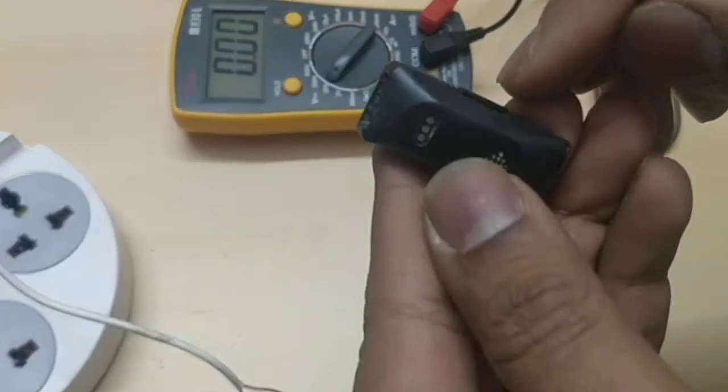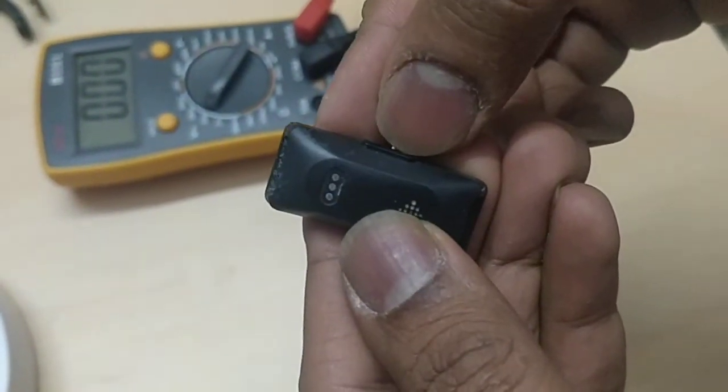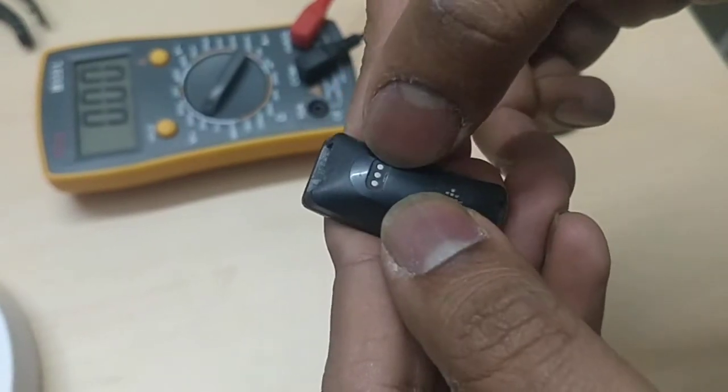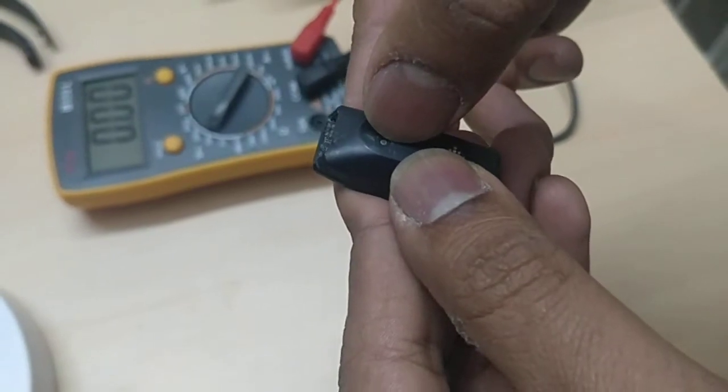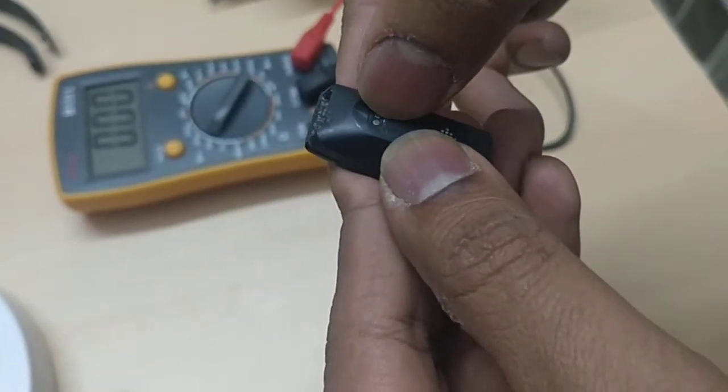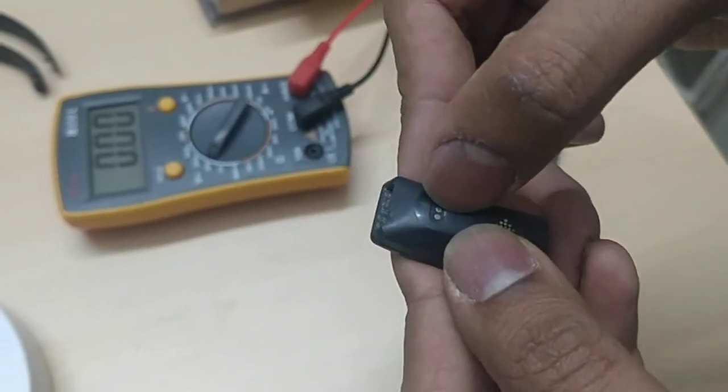And it so happens the pin as you can see which is near to the button is the ground, and the pin that is farthest from the ground is the positive 5 volts. The center one is supposed to be the data which we can safely ignore for now.